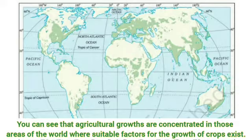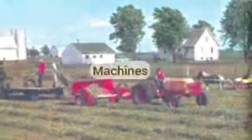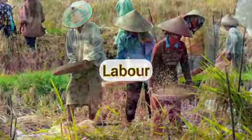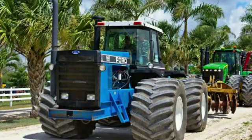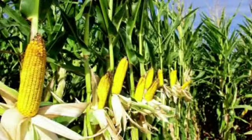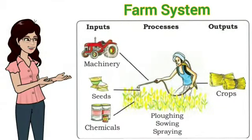Man-made factors include machines, fertilizers, labor, market, and transport — all of these play a vital role in the development of agricultural production. Now let us know about farm system. Farm system is simply the way a farmer makes use of resources available for agriculture.